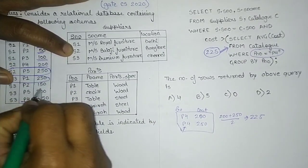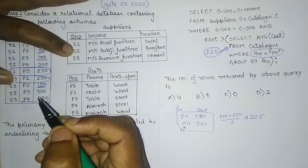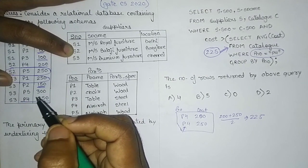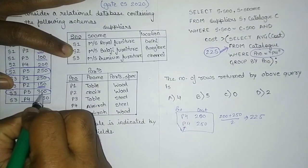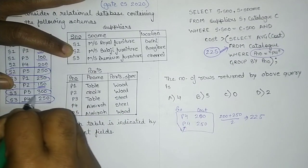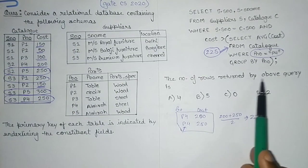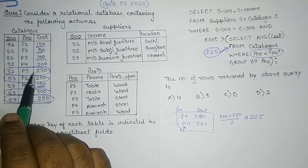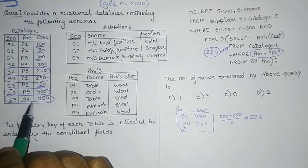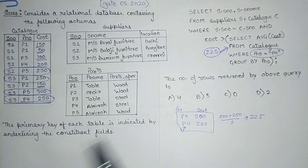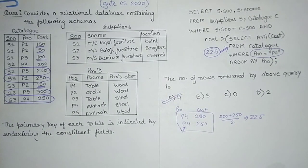Checking the remaining S3 records: one has cost 150, which is less than 225 — excluded. Another has cost 300, which is greater than 225 — included. Another has cost 250, which is greater than 225 — included. So the number of rows returned by the above query is four, because these four rows satisfy both conditions. The correct answer is 4 for this GATE 2020 question.